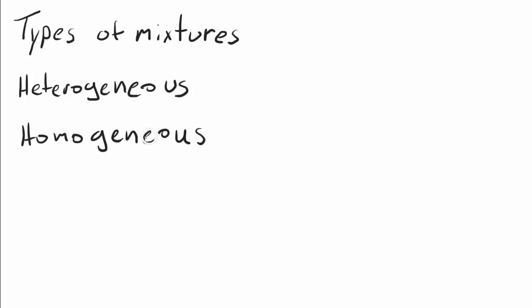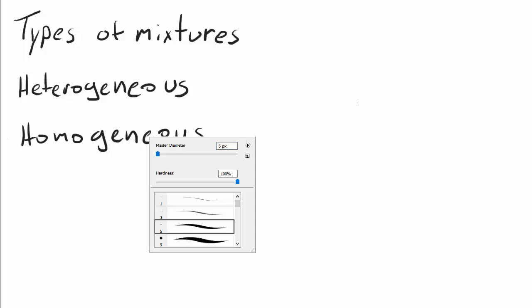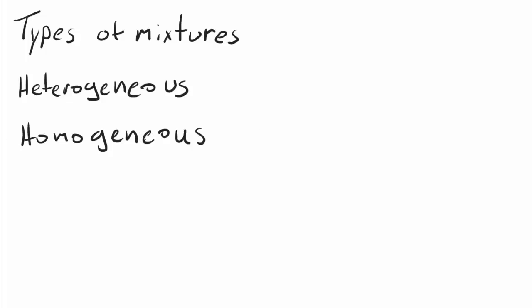So you can tell that both of these words share similar prefixes and a common root. The prefix hetero means different, the prefix homo means same, and the root gene or genius or genus is a Greek root that means kind. So heterogeneous literally, if you put the two parts together, means different kind, and homogeneous means same kind.